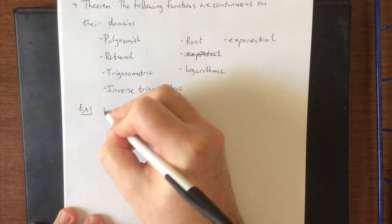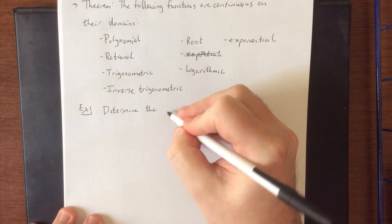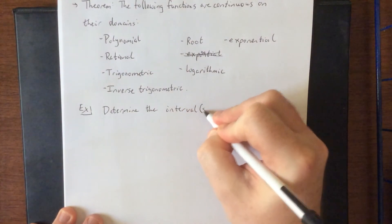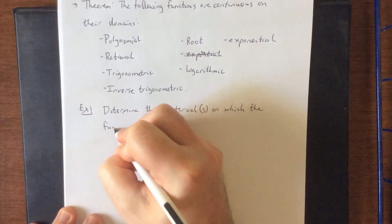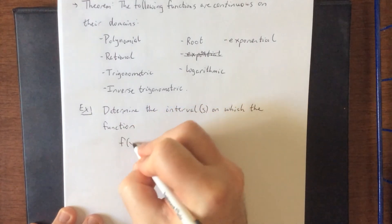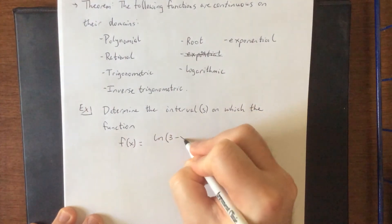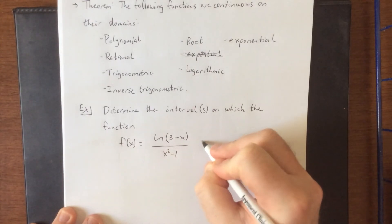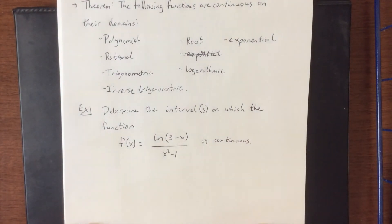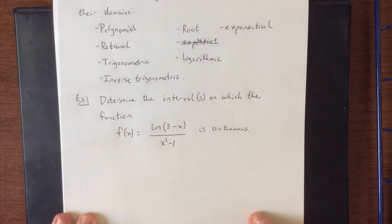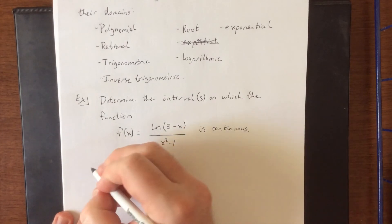So as an example, determine the interval or intervals on which the function f of x is equal to, let's do the natural log of 3 minus x divided by x squared minus 1 is continuous. Now given that this is a combination of a rational function, a polynomial function, and a natural log function, what we're going to do is find the domain.